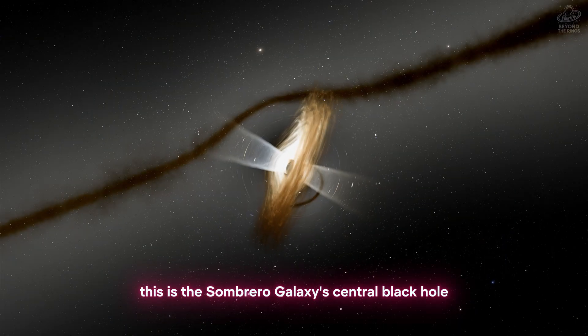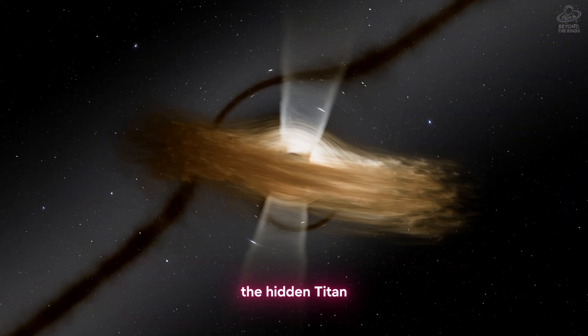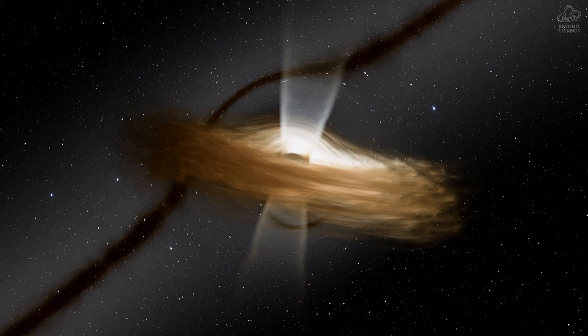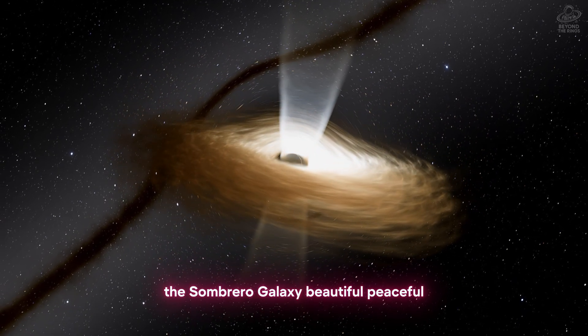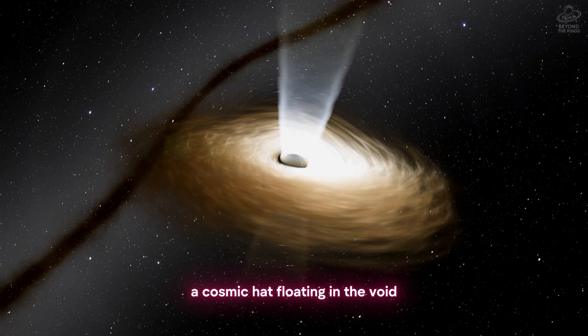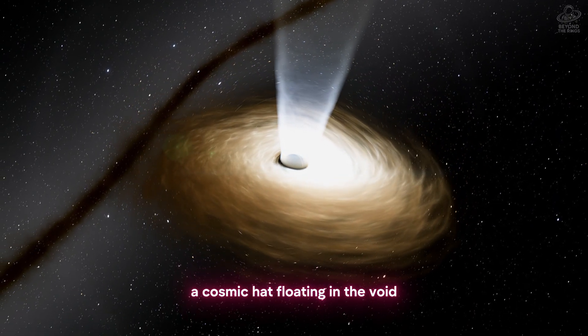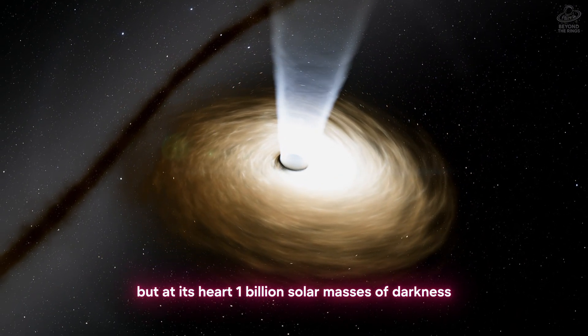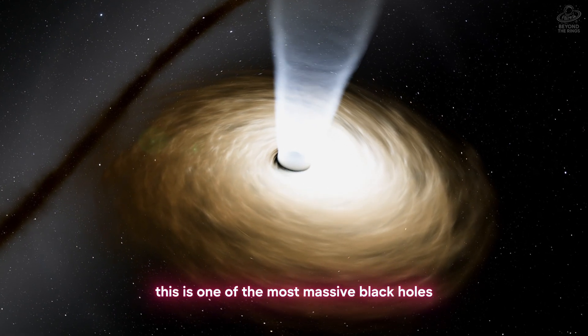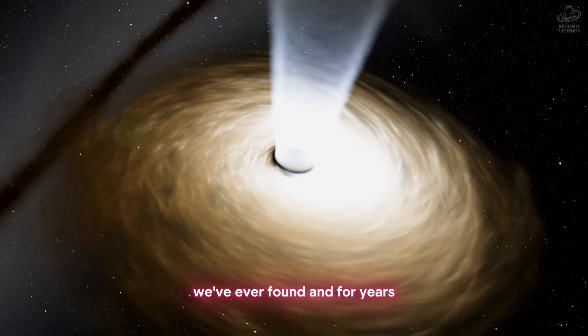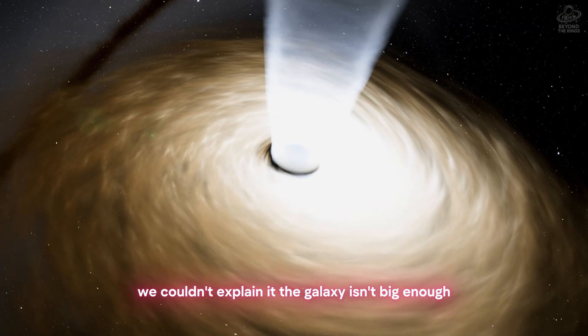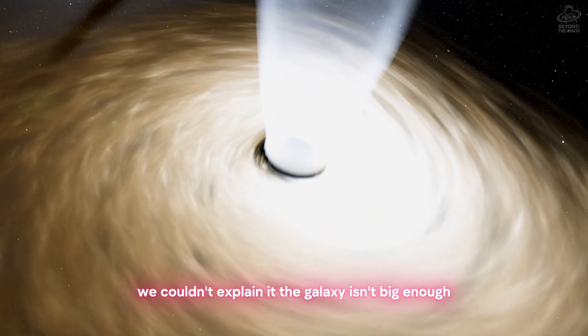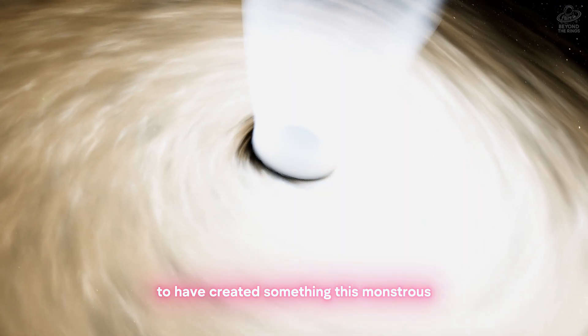This is the Sombrero galaxy's central black hole. The hidden Titan. The Sombrero galaxy. Beautiful. Peaceful. A cosmic hat floating in the void. But at its heart? One billion solar masses of darkness. This is one of the most massive black holes we've ever found. And for years, we couldn't explain it. The galaxy isn't big enough to have created something this monstrous. The physics doesn't add up.